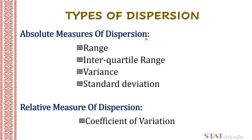These types of dispersion are also grouped. There are absolute measures of dispersion, which include the range, the interquartile range, the variance, and the standard deviation. And the relative measures of dispersion include the coefficient of variation, or CV for short.